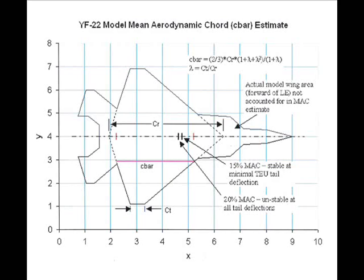Drop model testing initiated at a CG of about 25% MAC with a small amount of trailing edge up elevator deflection, expecting that this would be a good starting point. It was quickly learned that 25% was unstable at all elevator deflections. 20% MAC was also unstable at all elevator deflections.